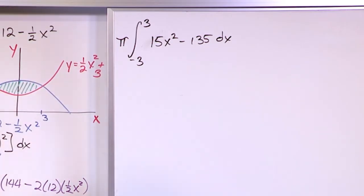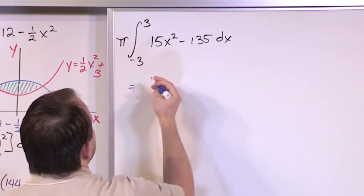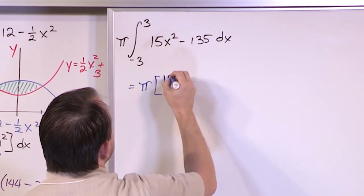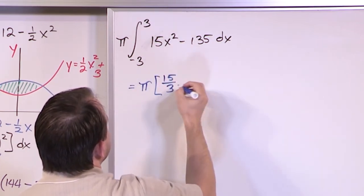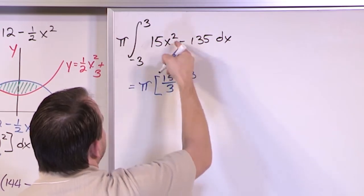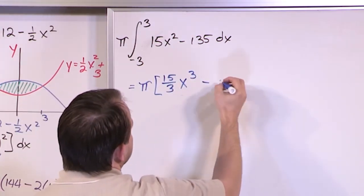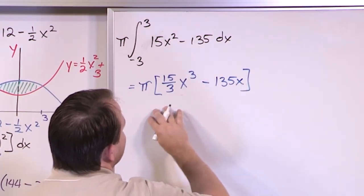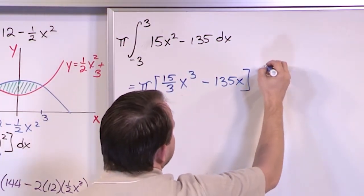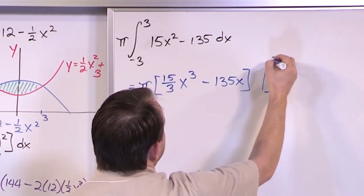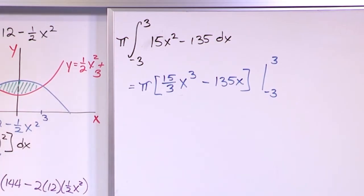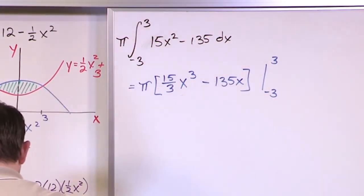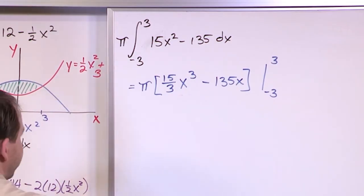Integrating: 15x² integrates to 15/3 · x³, which is 5x³. And 135x. So the antiderivative is 5x³ minus 135x, evaluated from negative 3 to positive 3. The integration is complete — now we just evaluate at the upper and lower limits.